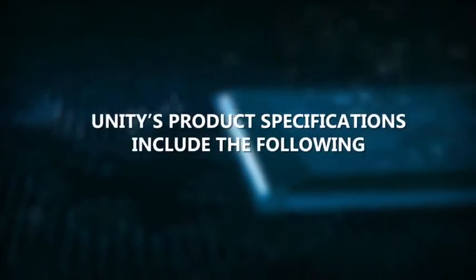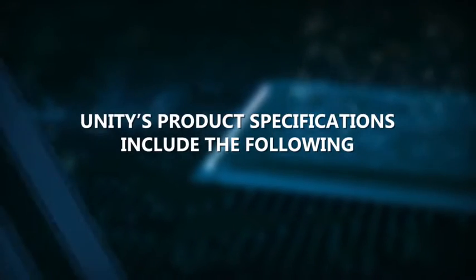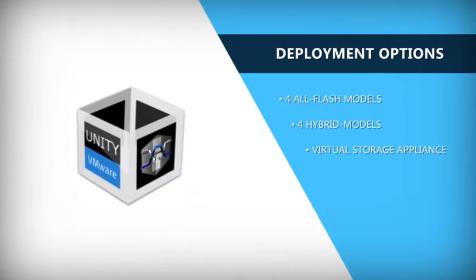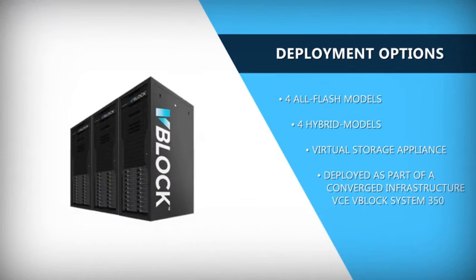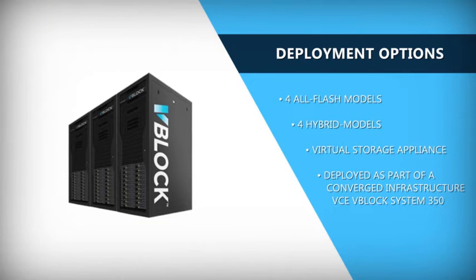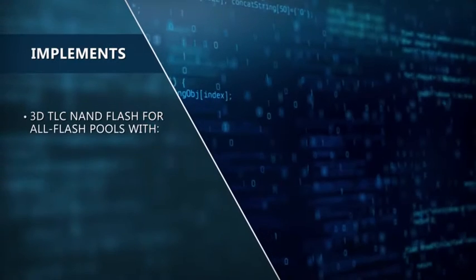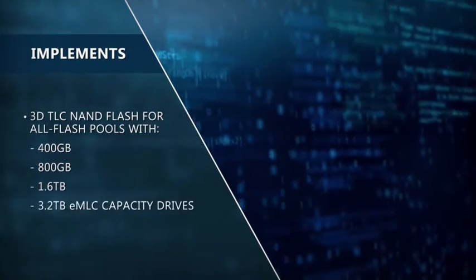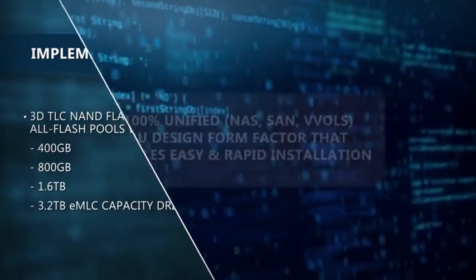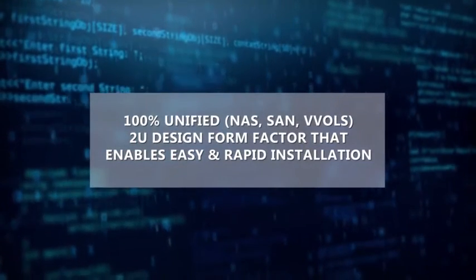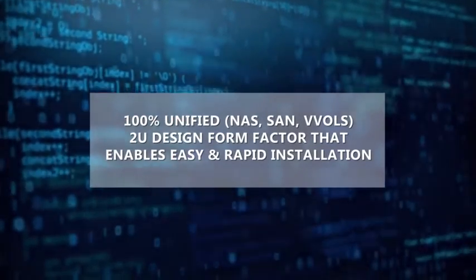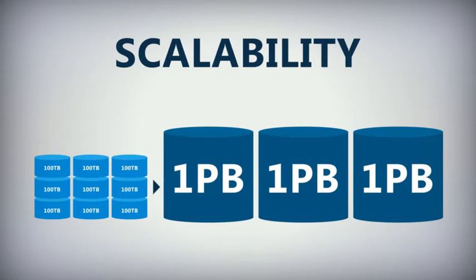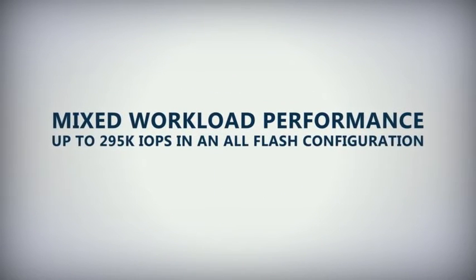Unity's product specifications include the following capabilities and service offerings. Deployment options include four all-flash models and four hybrid models, as well as a virtual storage appliance. Unity will also be deployed as part of a converged infrastructure VCE vBlock. It implements 3D TLC NAND Flash for all-flash pools with 400GB, 800GB, and 1.6TB along with 3.2TB MLC capacity drives, in a 100% unified 2U design form factor enabling easy and rapid installation. Scalability ranges from 900TB to 3PB capacity, with mixed workload performance up to 295K IOPS in an all-flash configuration.